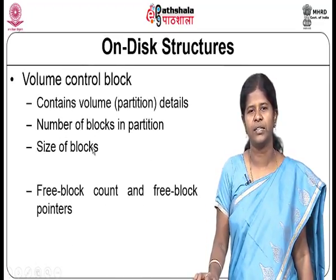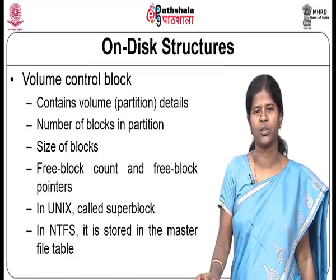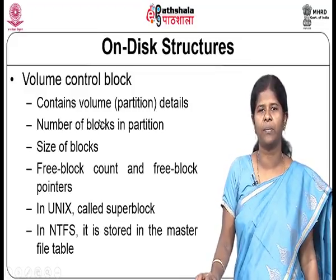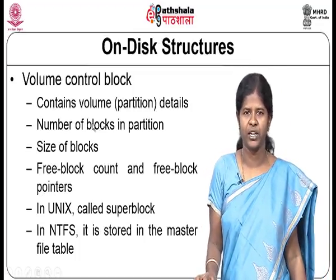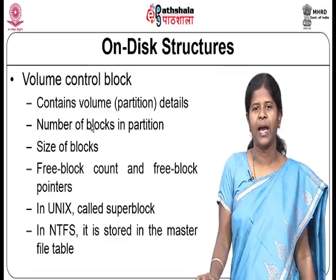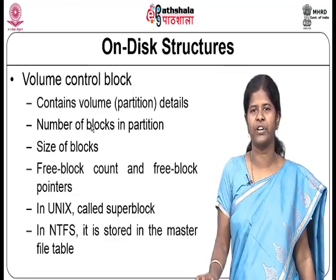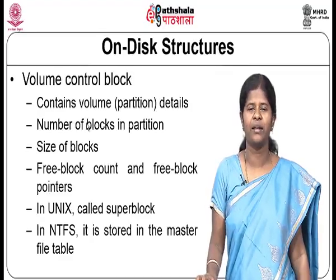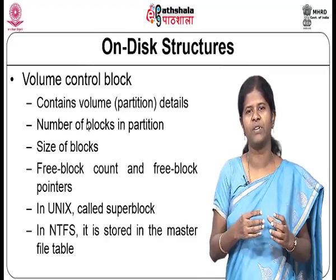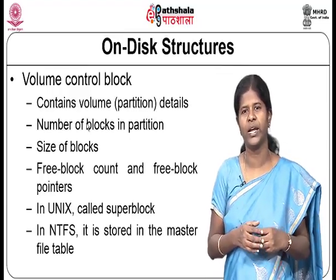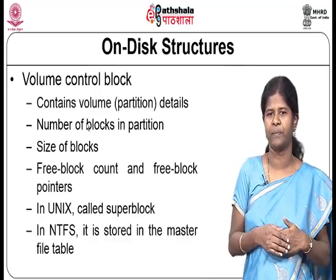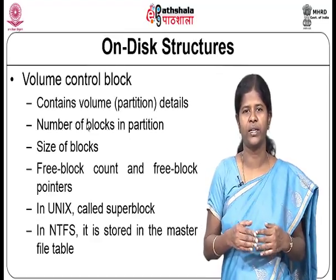The next data structure is the volume control block, which has information about a particular volume or partition — the total number of blocks, the size of each block, the number of free blocks, and pointers to the free disk blocks. In Unix, following the boot block, this information is maintained in a disk block called the super block. In NTFS this is stored in the master file table.